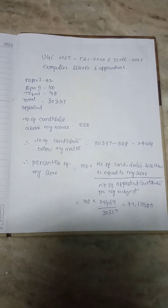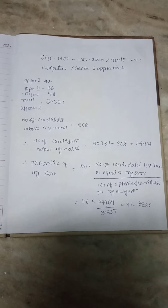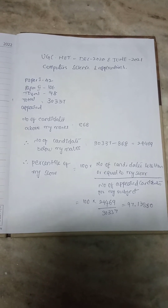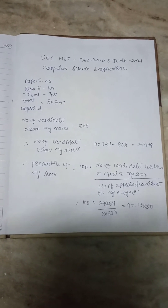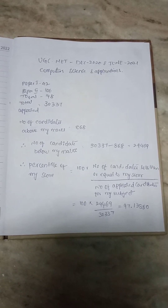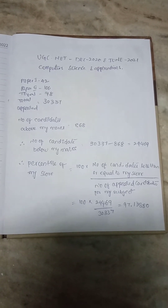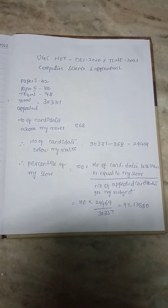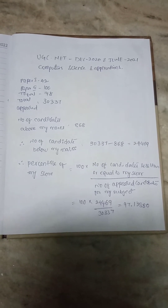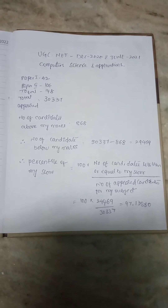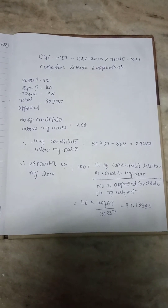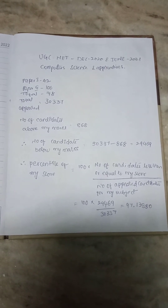You have a difference between percentage and percentile. To know the percentile, we have a formula: 100 multiplied by the number of candidates less than or equal to my score, divided by the number of candidates appeared for my subject. So how do we know the number of candidates less than or equal to my score?